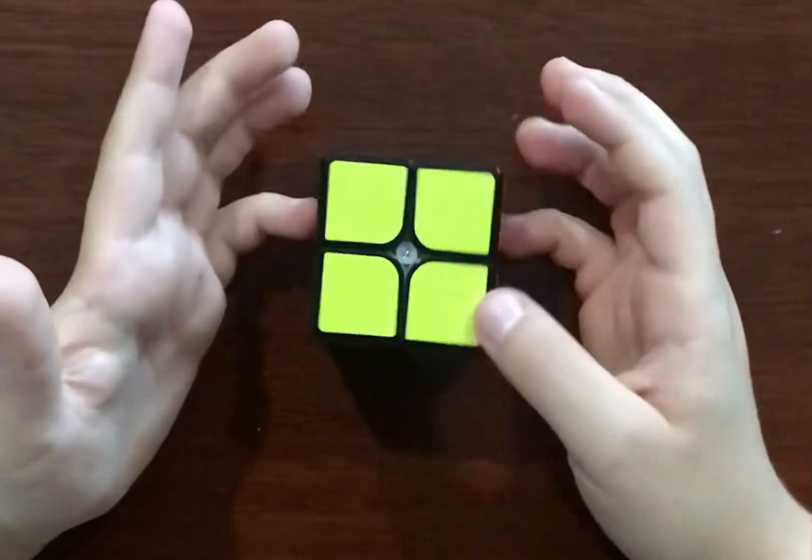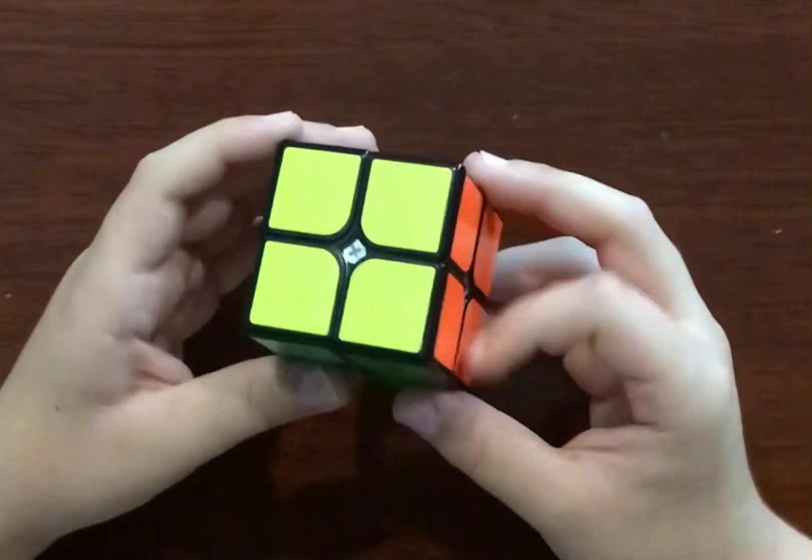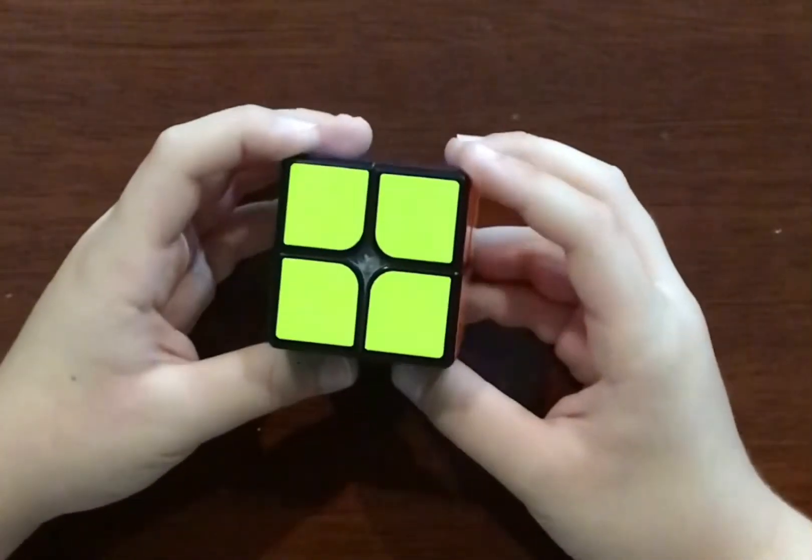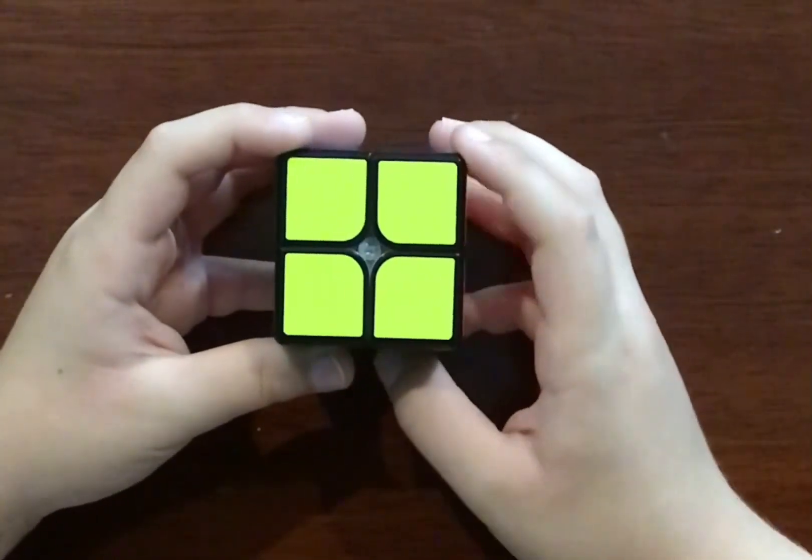So this is how you solve your cube with the LBL method with a J perm. Hope you guys like the video, like and subscribe, turn on notifications, and I'll see you next time. Bye!